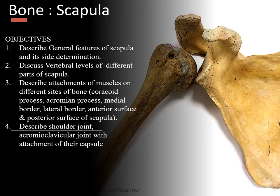Moving on to the scapula. The objectives are: to know the general features and how to determine its side; to know the vertebral level of the different parts of the scapula; to know the attachment of muscles on the different sides of the bone - such as at the coracoid process, acromion process, medial border, lateral border, anterior surface, and posterior surface; and to describe the shoulder joint, acromioclavicular joint, and their capsular attachments.